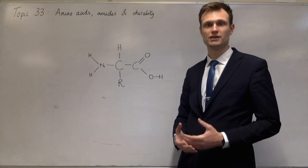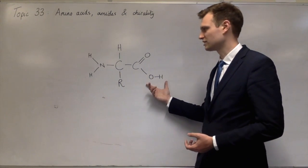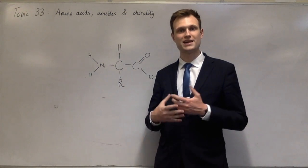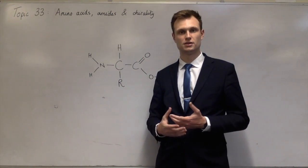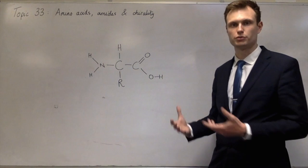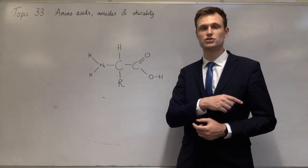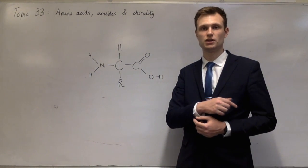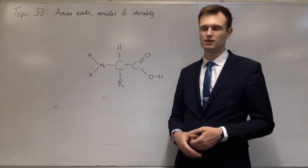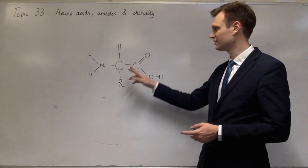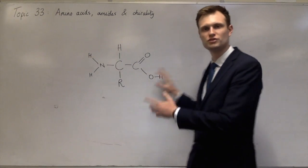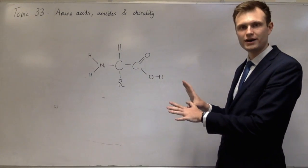What can also happen — and we hinted on it last time — is that carboxylic acids can react with amines to make amides. You can get chains of these forming, and that's a protein. If you remember from GCSE biology, amino acids join together to make protein chains. This carboxylic acid group and the amine on two separate molecules will form an amide.